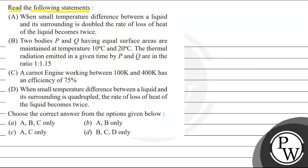Statement C: A Carnot engine working between 100 Kelvin and 400 Kelvin has an efficiency of 75%. Statement D: When a small temperature difference between a liquid and its surrounding is doubled, the rate of loss of heat of the liquid becomes twice.